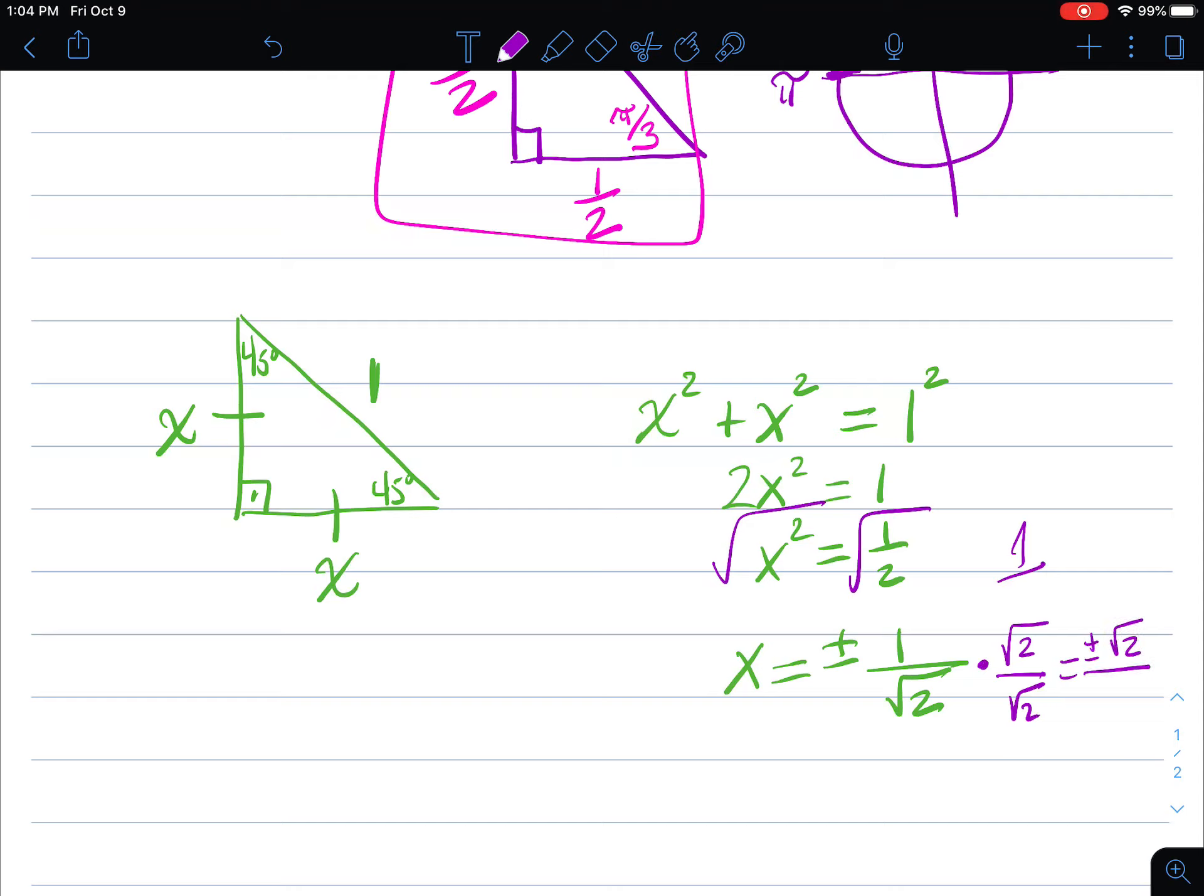And what happens is I get plus or minus radical 2 in the numerator and just plain old 2 in the denominator, because square root of 2 times itself is just 2. Since this is a length, we may only use that positive square root of 2 over 2.